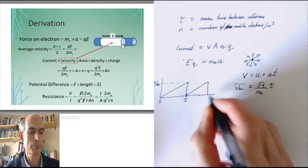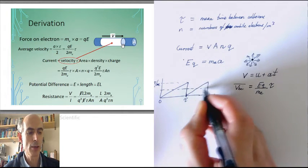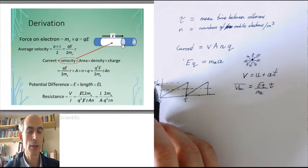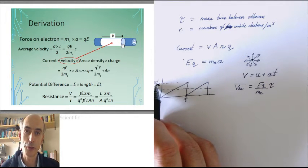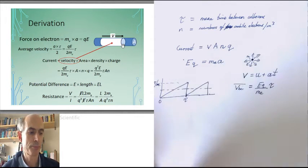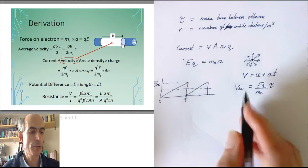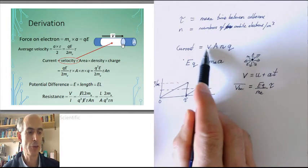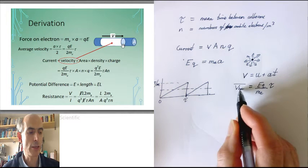And the average value of the velocity will be this, exactly half the value of the velocity at the collision. So the average value of the velocity that I'm interested in, in my current expression, is half of v_BC.